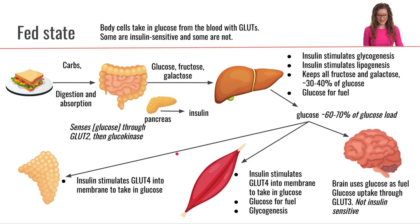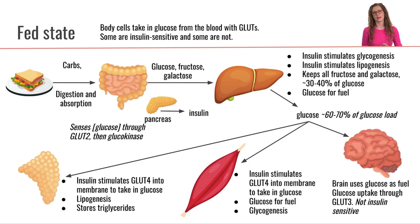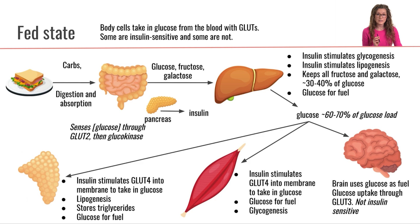Glucose can also be taken up by the adipose tissue. Adipose is similar to muscle in that it also has the GLUT4 transporter, which is insulin sensitive, so adipose cells are only going to be able to take in glucose through GLUT4 when insulin is present. The adipose cells can be performing lipogenesis with that glucose, storing it as triglycerides, and can also be using glucose as fuel. This is overall what's going on in the fed state, and we'll talk in more detail about how some of these hormones are working at the molecular level.